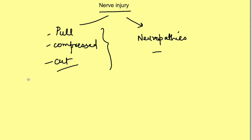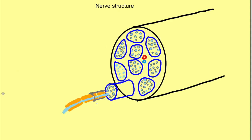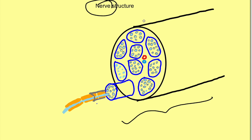Now let's see how the severity of nerve injuries is classified and what changes occur in case of nerve injury. First, we should know a little about the structure of a nerve. A nerve is not a single neuron — it is basically a collection of a lot of neurons. In a cross section of a nerve, the outer black lining is a connective tissue covering surrounding a lot of bundles of neurons. This outermost connective tissue covering is known as the epineurium.